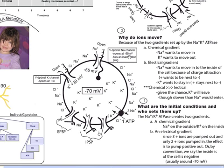A unique feature of the voltage-dependent sodium channel is something called an inactivation plug. This is going to swing in shortly after the channel is open and basically close all the sodium channels down. The voltage-dependent potassium channel is going to open at plus 30 millivolts, and when it gets to plus 30 millivolts, potassium is going to leave.